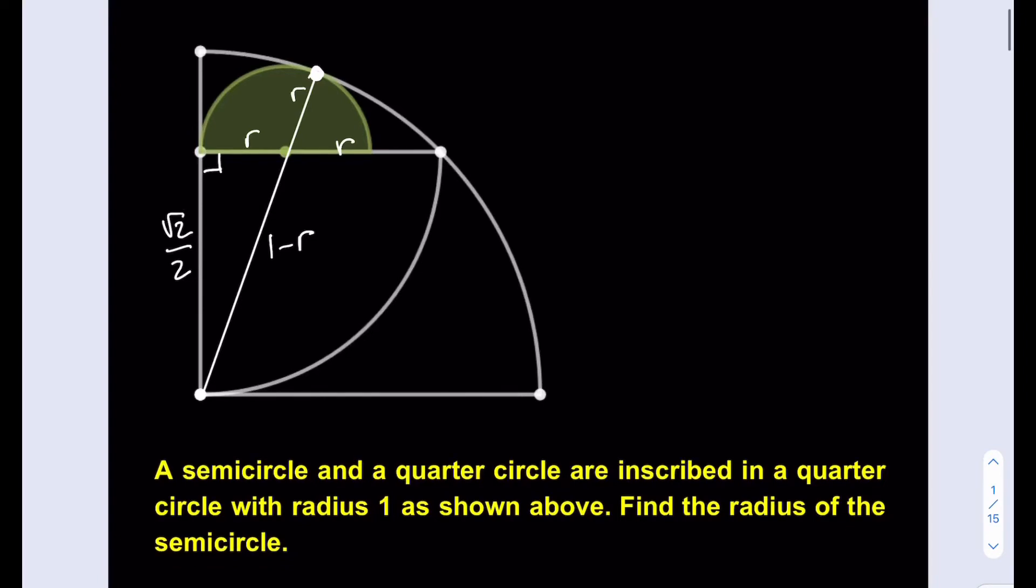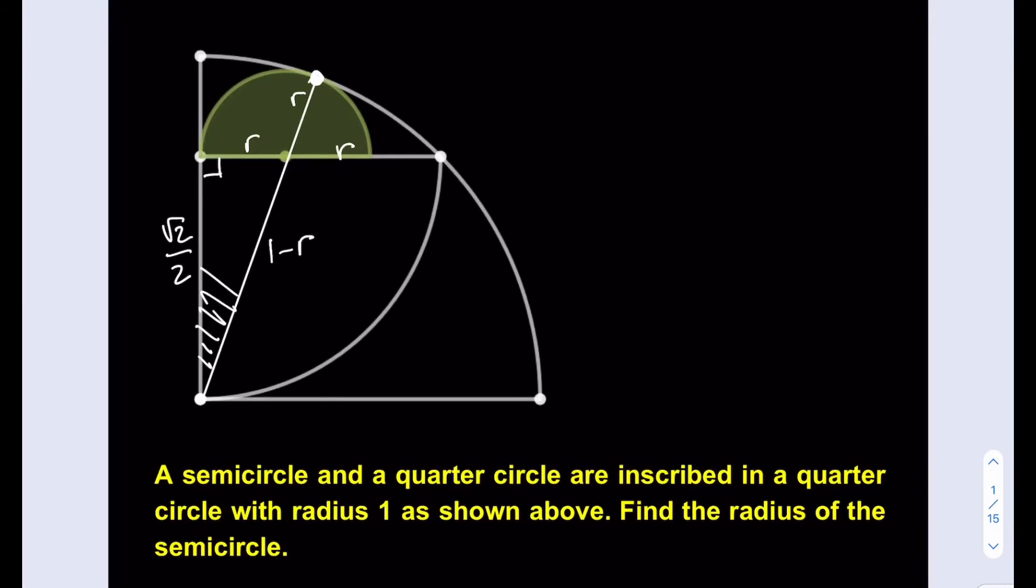Basically what I get here is a really cool relationship that allows me to find r. That's why I consider this problem easier than others. I'm going to shade the right triangle that I'm going to use and set up my equation. Let's use the Pythagorean theorem: root 2 over 2 squared plus r squared equals 1 minus r quantity squared. Let's expand this: 1 half plus r squared equals 1 minus 2r plus r squared.